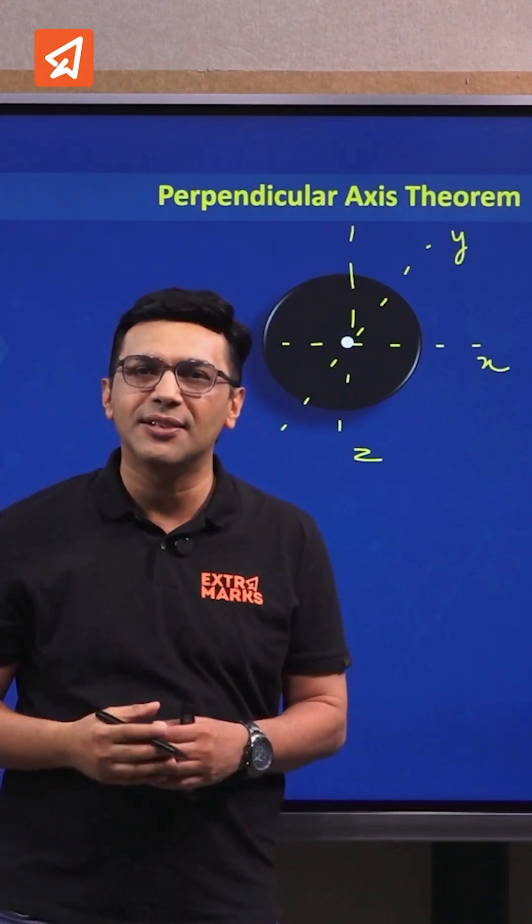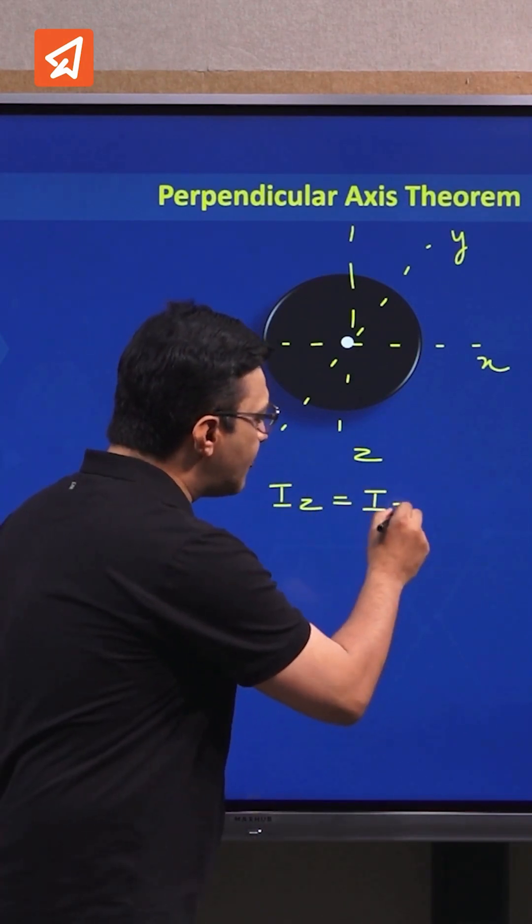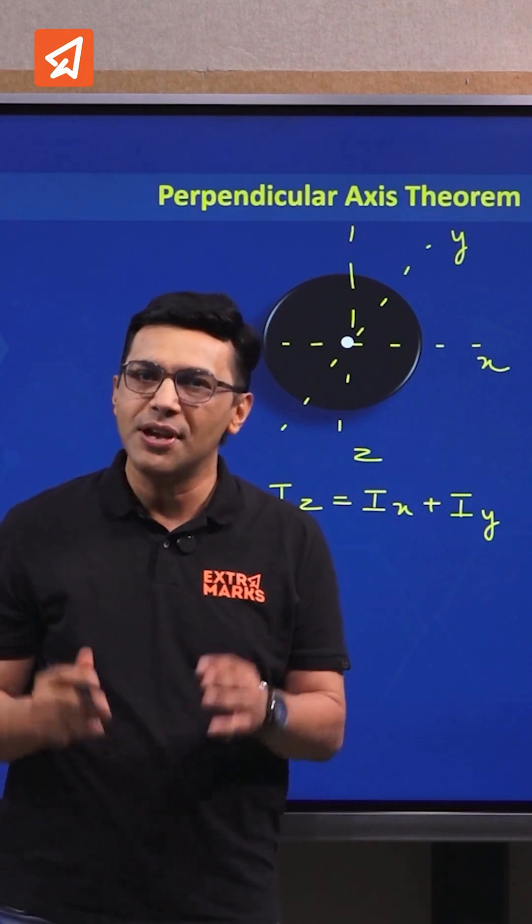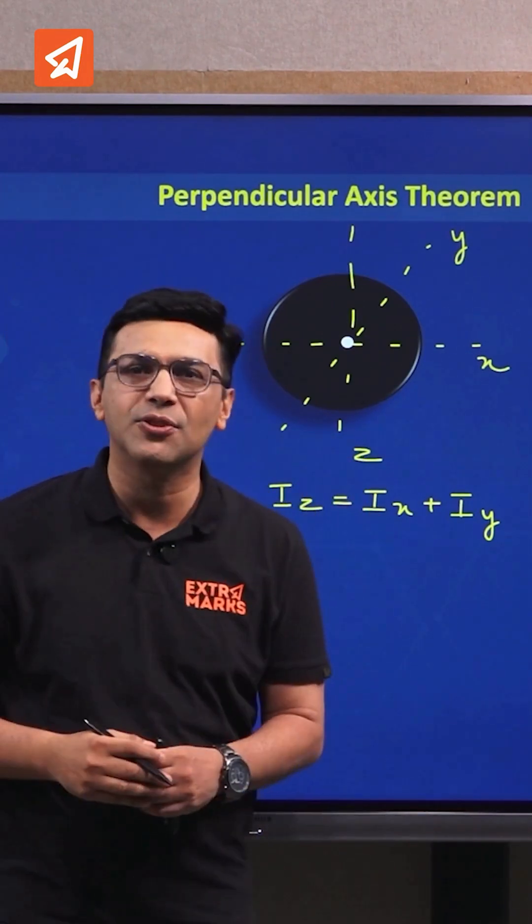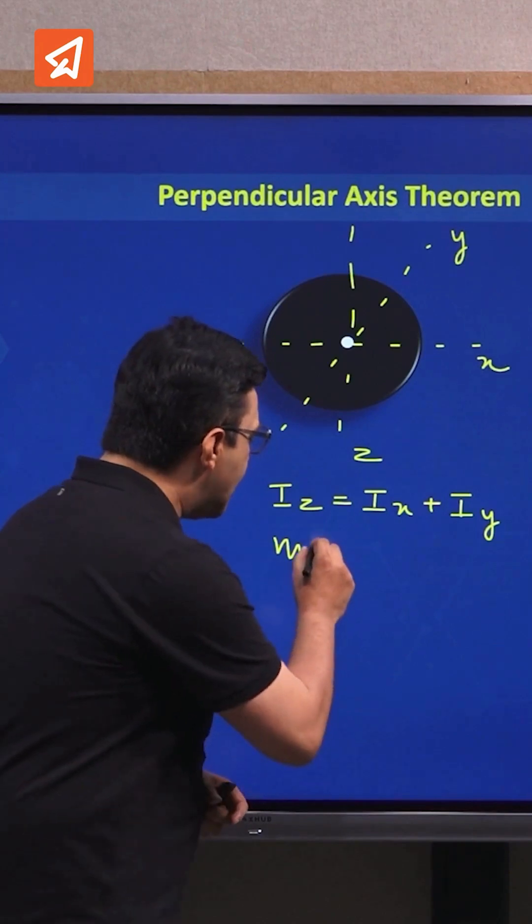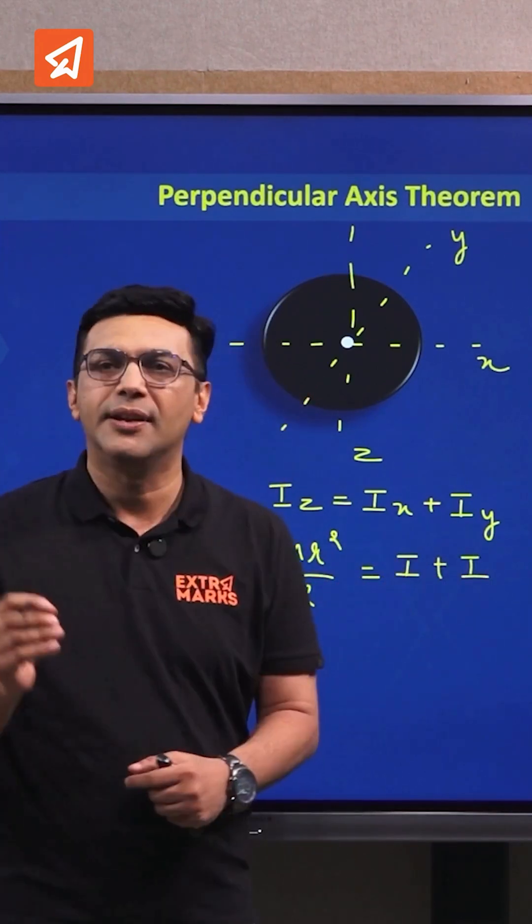Theorem of perpendicular axis states that the moment of inertia about this z-axis is equal to the moment of inertia about the x-axis plus the moment of inertia about the y-axis. In that case, we can say that the moment of inertia about the z-axis of the disk, which is mR²/2, is equal to I + I, which is going to be the moment of inertia about one of the diameters.